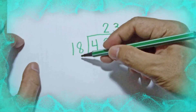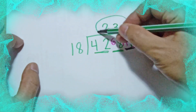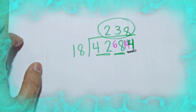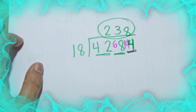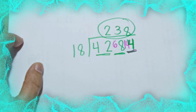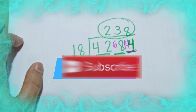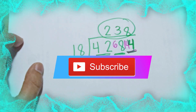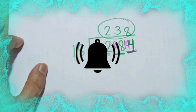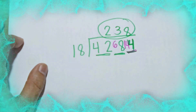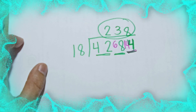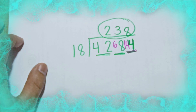So the answer when we divide 4284 by 18 is 238. That's the short way of dividing whole numbers. If you want to learn more maths topics, please don't forget to subscribe, like, and share my videos, and hit the bell so you get notified the next time I upload. Bye for now!